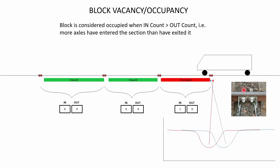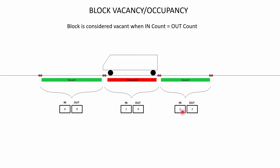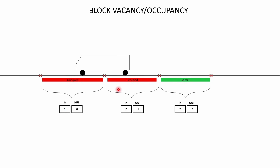If there was only one set of coils, the axle counter would know a wheel passed but not which direction it was going. So in order to calculate in-count versus out-count, the axle counter must also know the direction of the wheel. A block is considered occupied when in-count is greater than out-count. So when one axle enters and none has exited, in-count is 1, out-count is 0. As more axles enter, the in-count increases. As axles exit the section, the out-count increases. As soon as in-count equals out-count, the axle counter knows that section is vacant. That's how block occupancy and vacancy works.